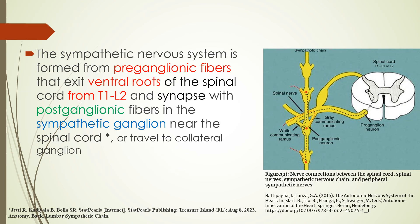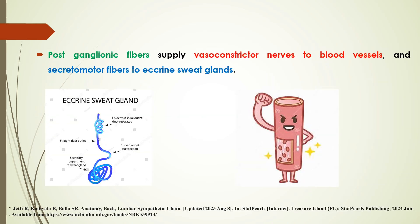The sympathetic nervous system is formed from preganglionic fibers, the extraventral root of the spinal cord from T1 to L2, and synapses with postganglionic fibers in the sympathetic ganglion near the spinal cord, or travels to collateral ganglion. The postganglionic fiber supplies vasoconstrictive nerves to the vessel walls and secretomotor fibers to eccrine sweat glands.